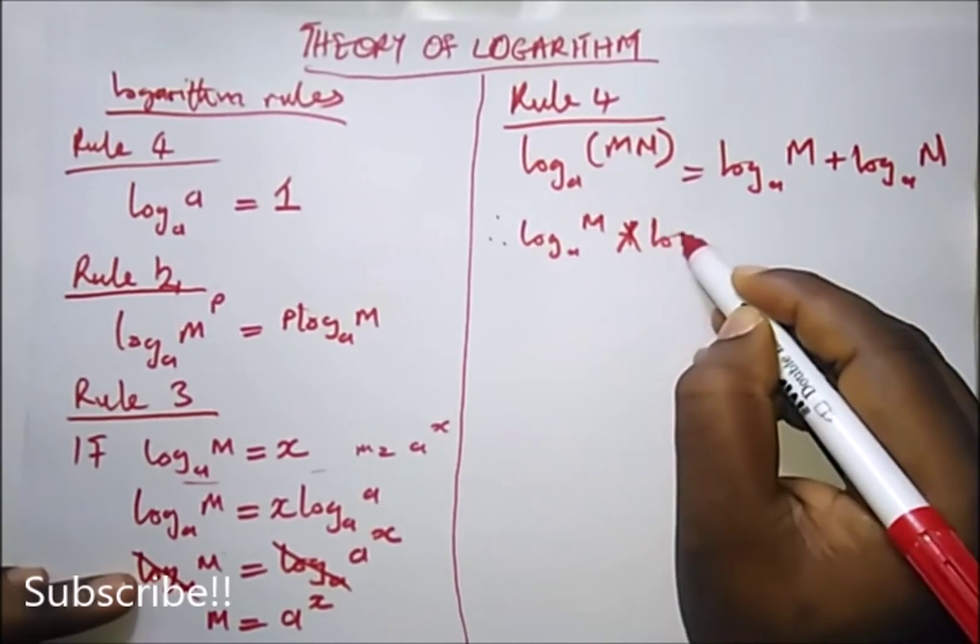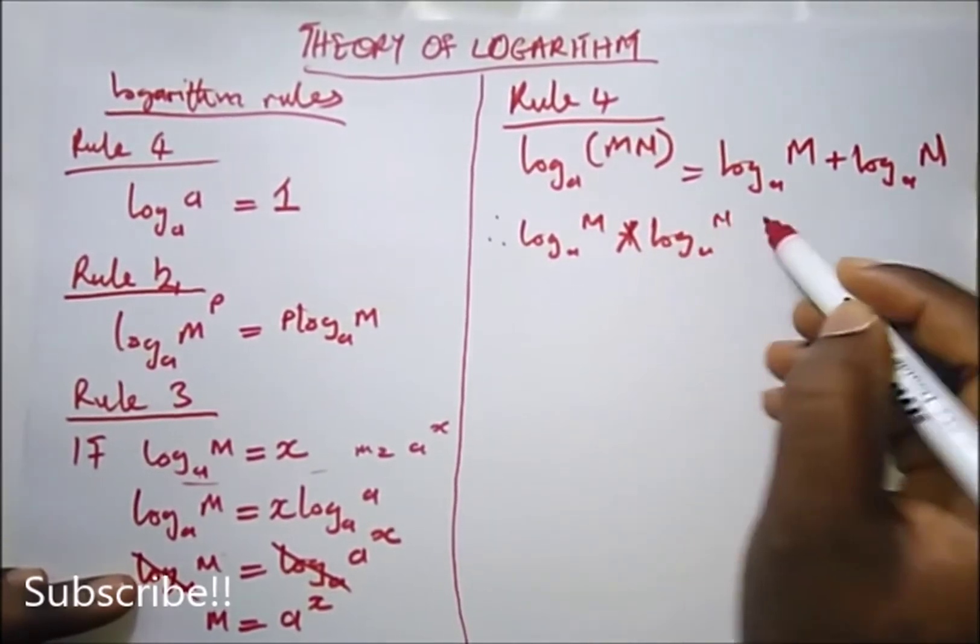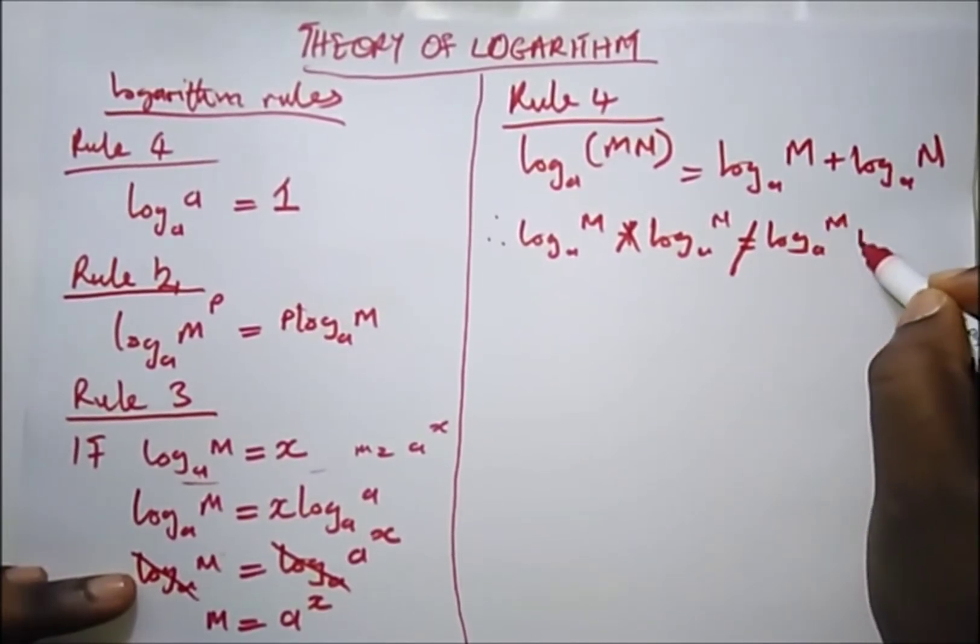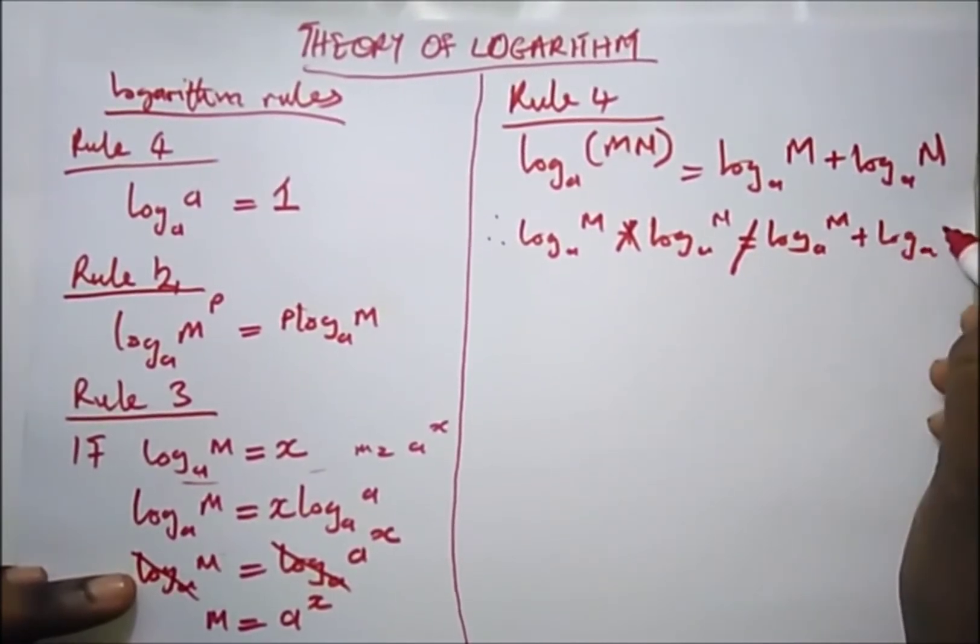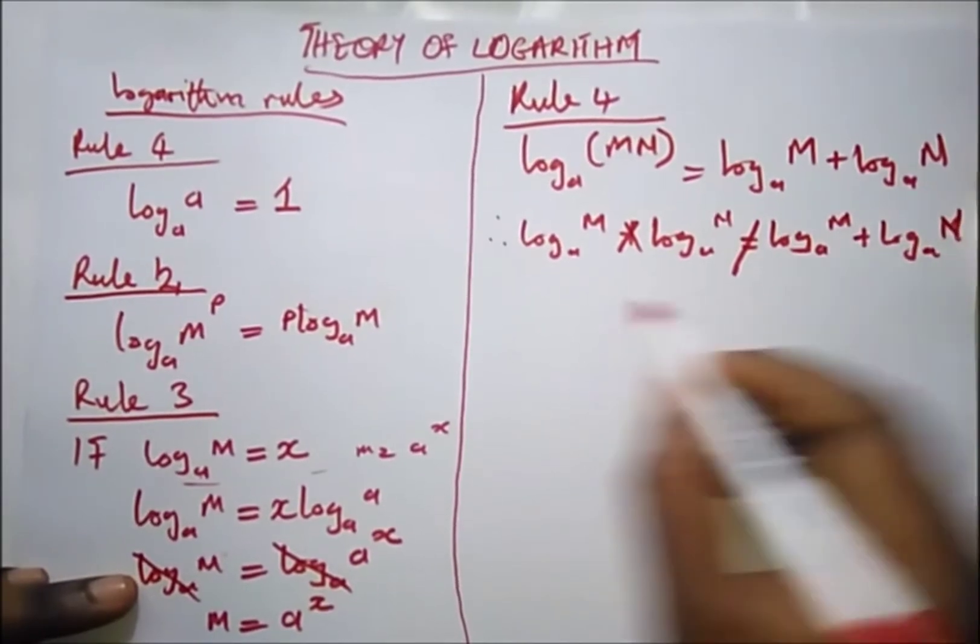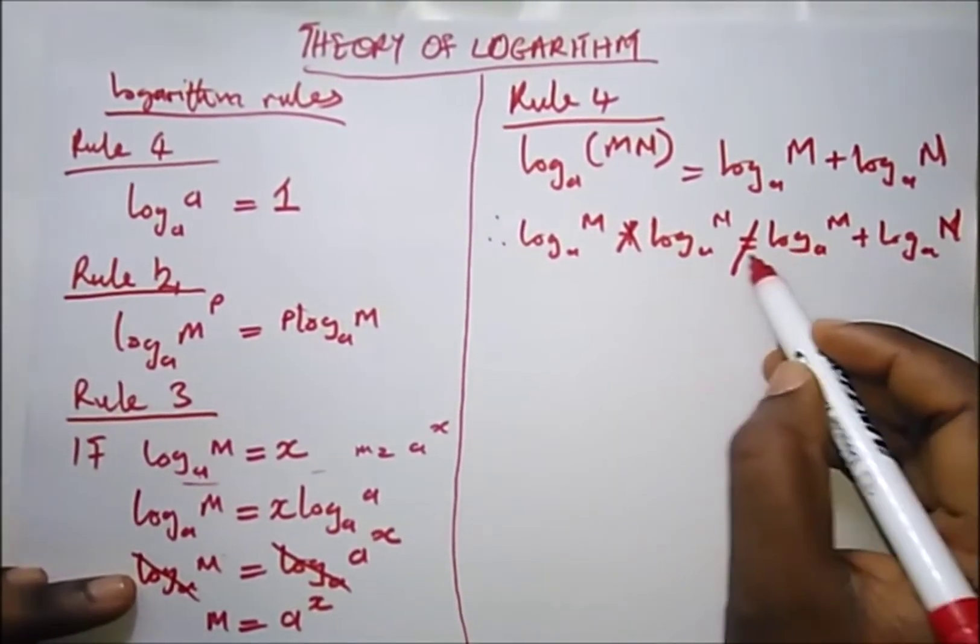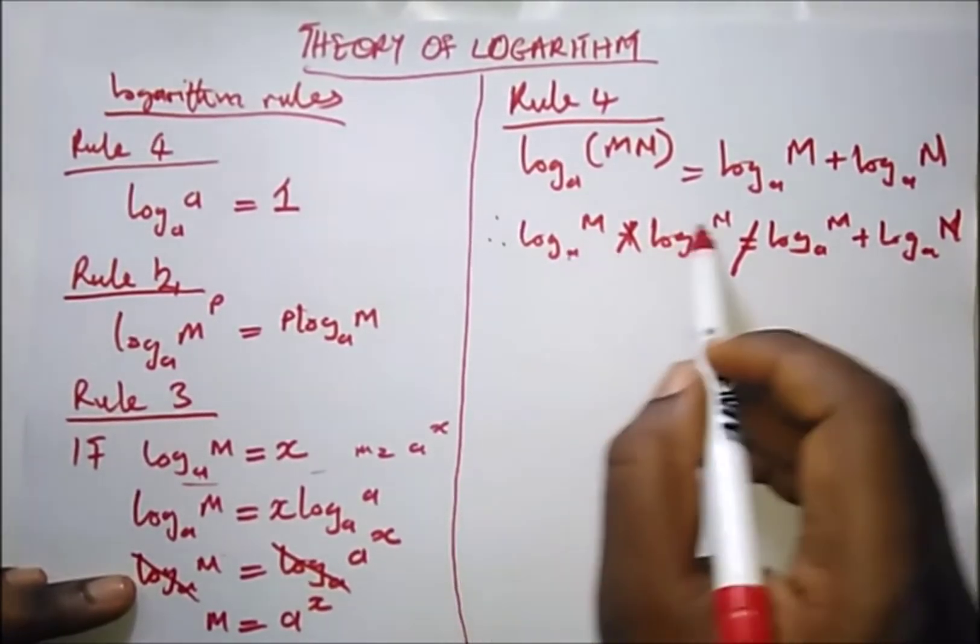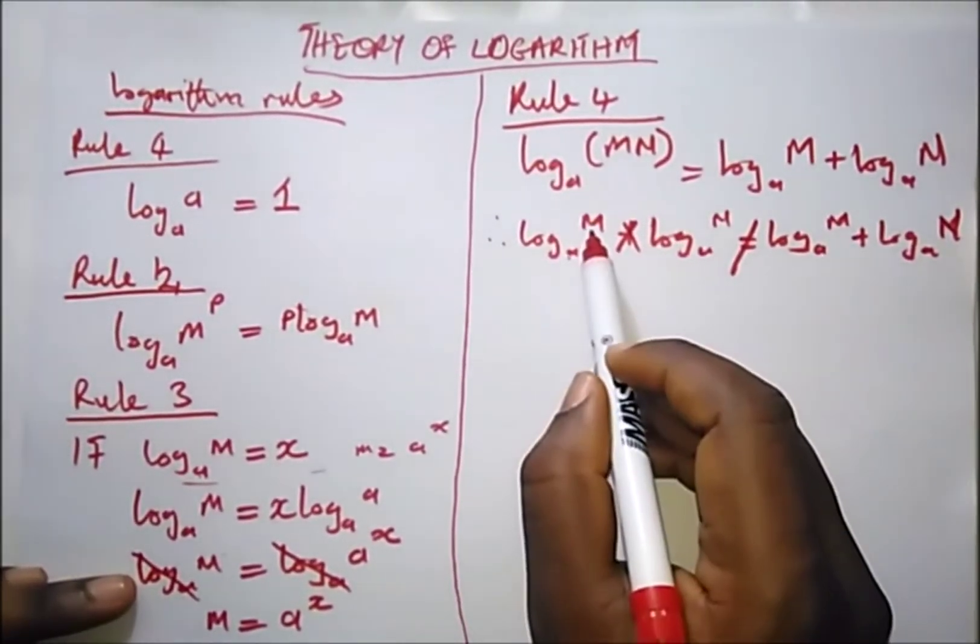multiplied by log base a of n is not equal to this. It can never be equal to this. There will be questions that want to confuse you on this, multiplying and you simply say it is equal to this. No, this is a different log multiplying each other; this is a standalone number, but these are together—the product rule is binding them under the same log.